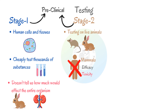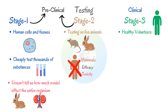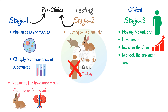The final stage is clinical testing, where we finally give the drug to humans. The first step is to give the drugs to healthy volunteers, starting with a really low dose just to check it doesn't cause any problems. Then we slowly increase the dose, with doctors keeping a close eye on the health of the volunteers and checking for any side effects.